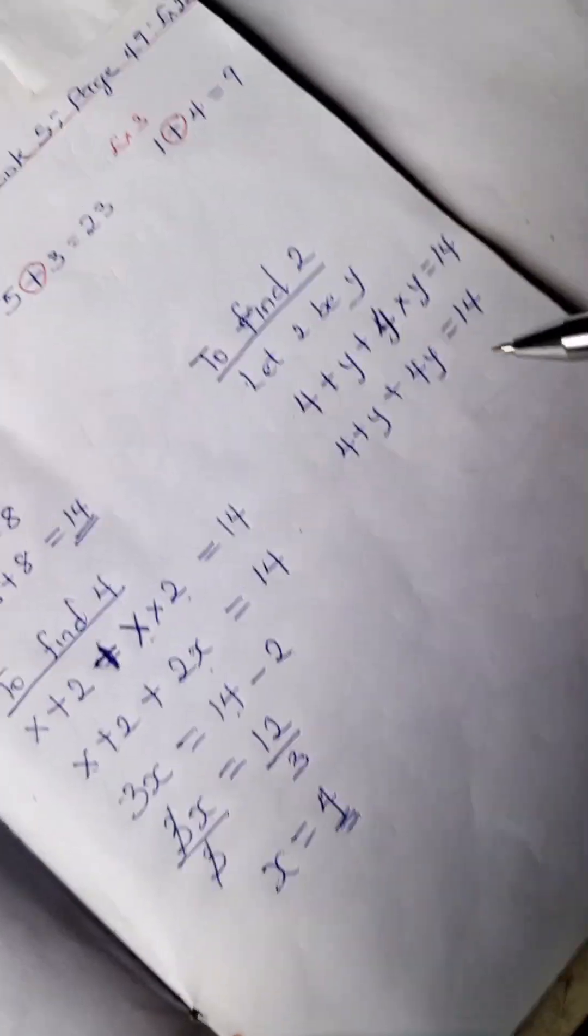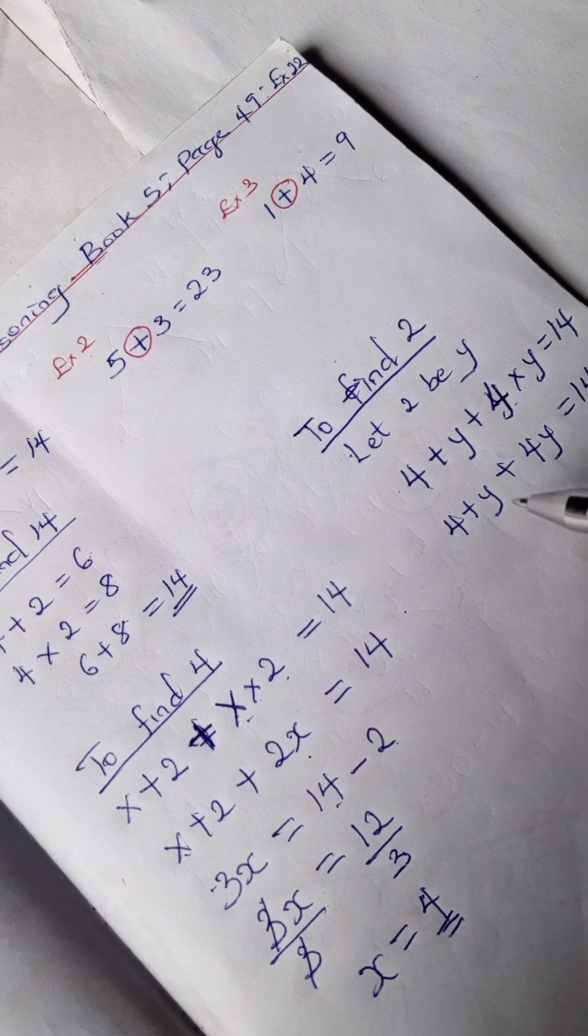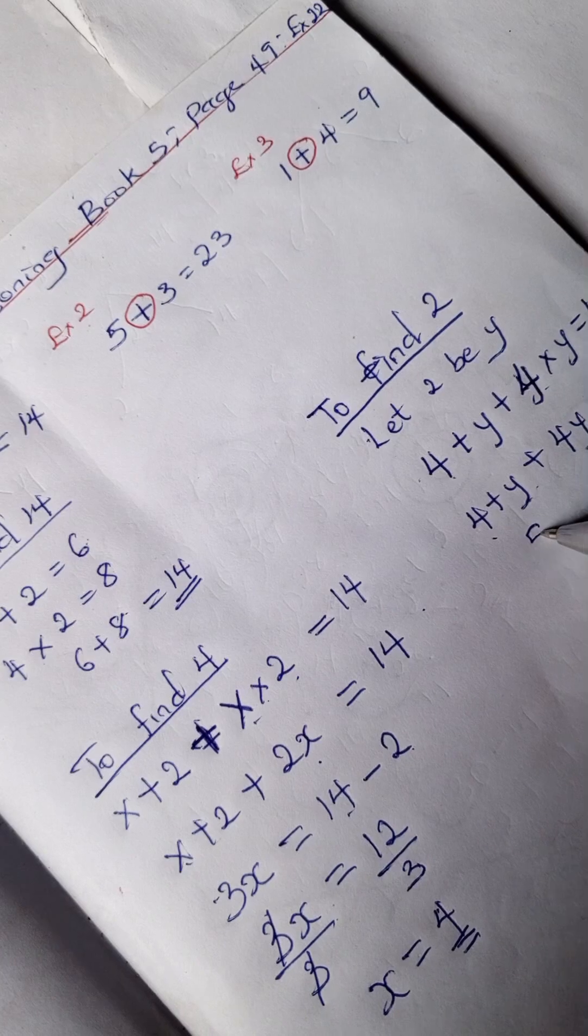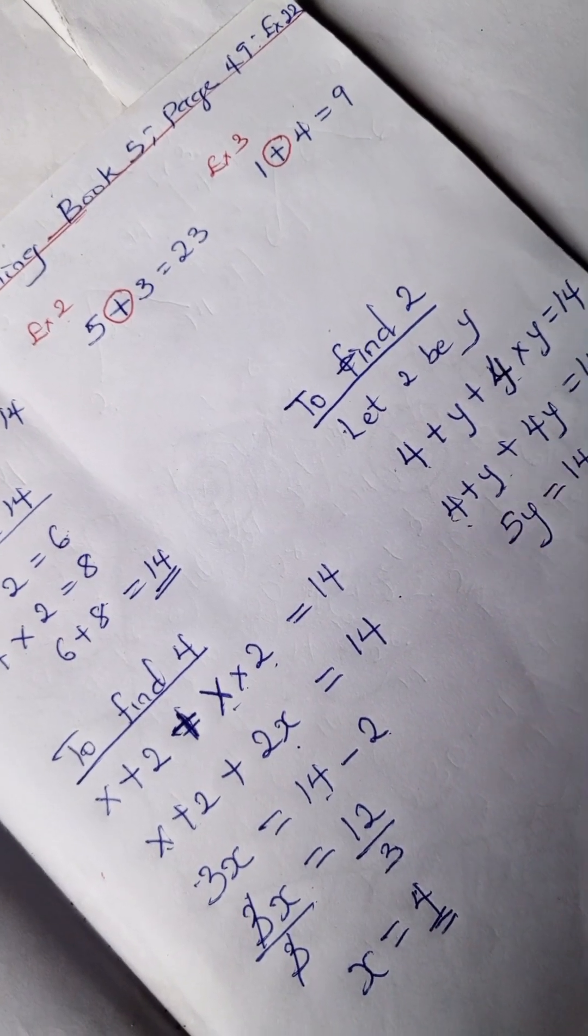Our like terms here: we have y plus 4y, which is 5y equals 14. This crosses over minus 4, so we have 5y equals 14 minus 4, which is 10.